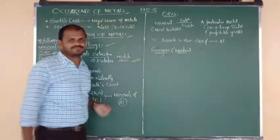An example — bauxite. The formula of bauxite is Al₂O₃·2H₂O, meaning alumina along with 2 moles of water molecules. This compound occurs naturally from the earth crust, so bauxite is an example of a mineral.